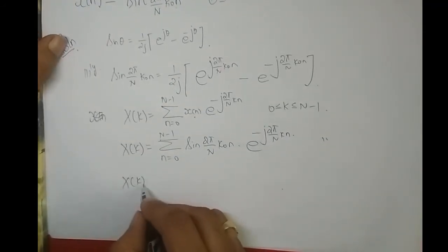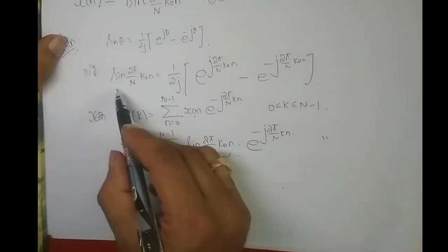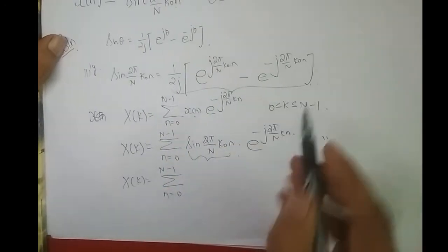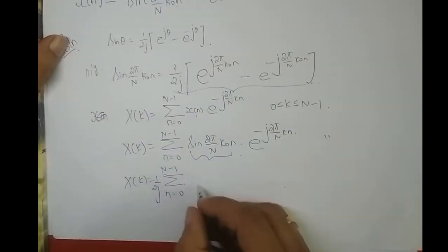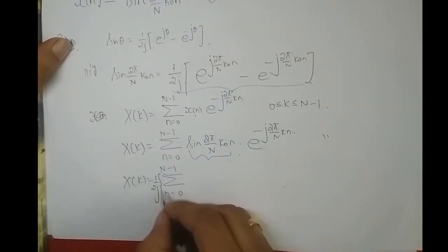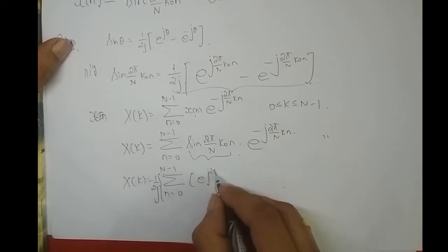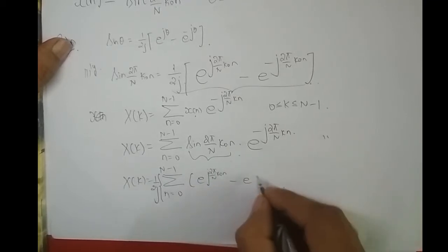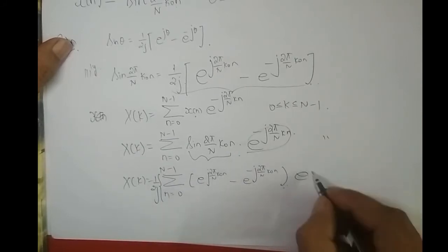In the next step, X(k) equals summation n from 0 to N−1, but instead of writing sine I will write it in terms of exponential. Since 1/2j is constant, I will take it out: (1/2j) multiplied by (e^(j2π/N · k₀n) − e^(−j2π/N · k₀n)), and the remaining term is e^(−j2π/N · kn).